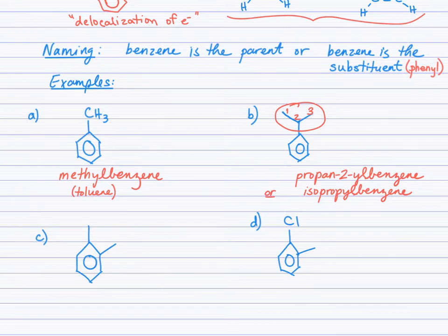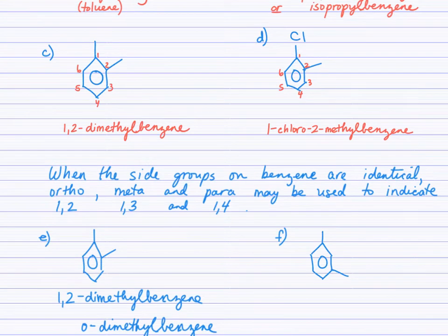Okay, give C and D a shot. You'll notice that there are two side groups, and so, yes, we will need to number the location of the side groups. Okay, so in part C, we could number clockwise as I did from the top carbon and find our methyl groups off of 1 and 2, or I could have started with this carbon, and green is carbon number 1, but then I would have had to number counterclockwise. So either way, red or green, you're going to come up with 1,2-dimethylbenzene.